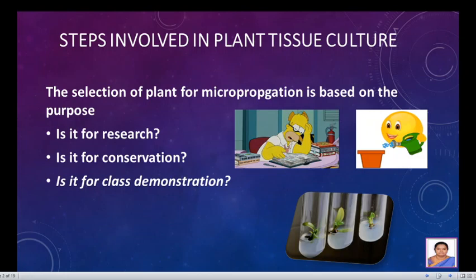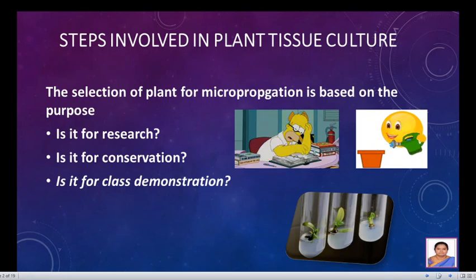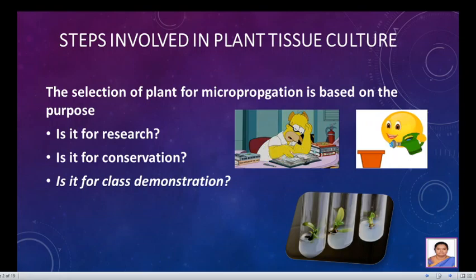For conservation criteria, the plant may be red-listed or not abundantly available locally. In both these cases — research and conservation — the plant can be a herb, shrub, tree, or a liana, though the micropropagation method depends entirely on the habit of the plant and the family of the species. If the purpose is to educate students on the methodologies involved, then any commonly available plant, especially herbs, can be chosen, since they respond faster and students can view their results within the completion of the term.